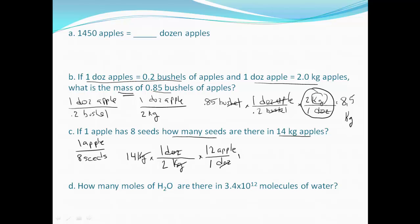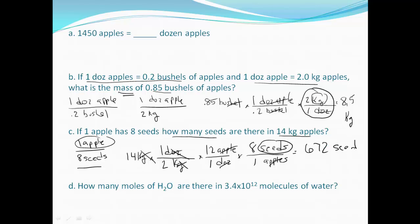Dozen cancels. We put apples in the denominator to cancel, and one apple contains eight seeds. This dimensional analysis technique ensures that as long as you're canceling the same units, the unit you end up with is your answer. Doing the math: 14 divided by 2, times 12, times 8 gives us 672 seeds. And that should make sense — 14 kilograms of apples yields 672 seeds.